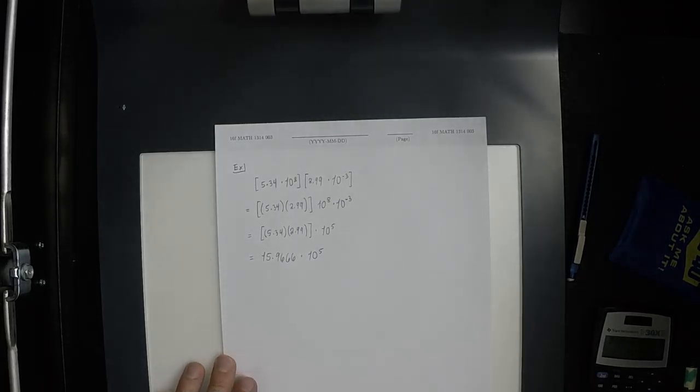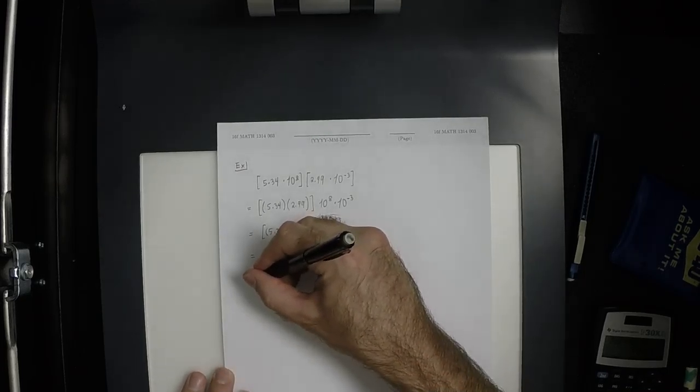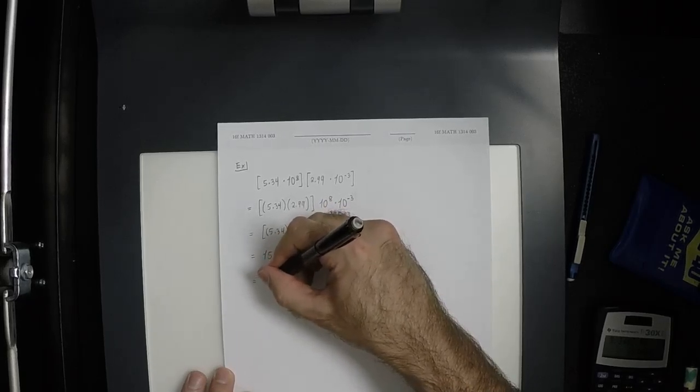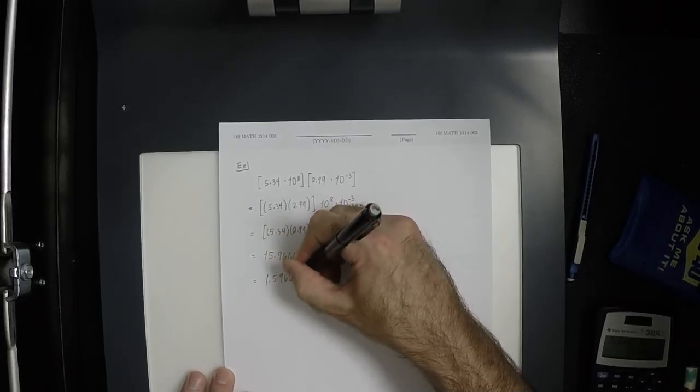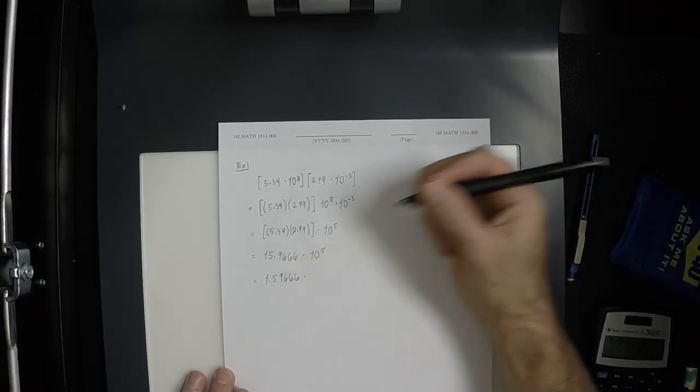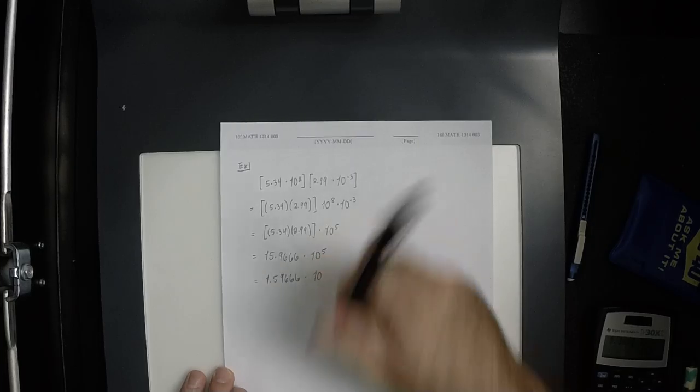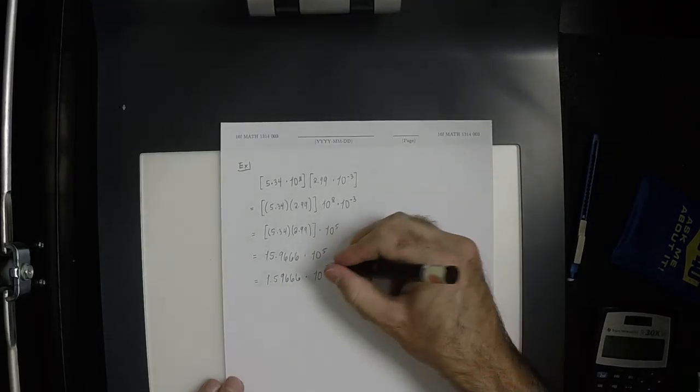This would be 5.34 times 2.99 times 10 to 5. This number is about 5, this is about 3, so the product is about 15. When things are written in scientific notation, you can always figure out approximately how big it is. 5.34 times 2.99 is 15.9666, multiplied by 10 to 5. Is this answer expressed in scientific notation? No. Why not? Because of the 15. So 1.59666, and moving the decimal place 1 to the left increases the exponent by 1.